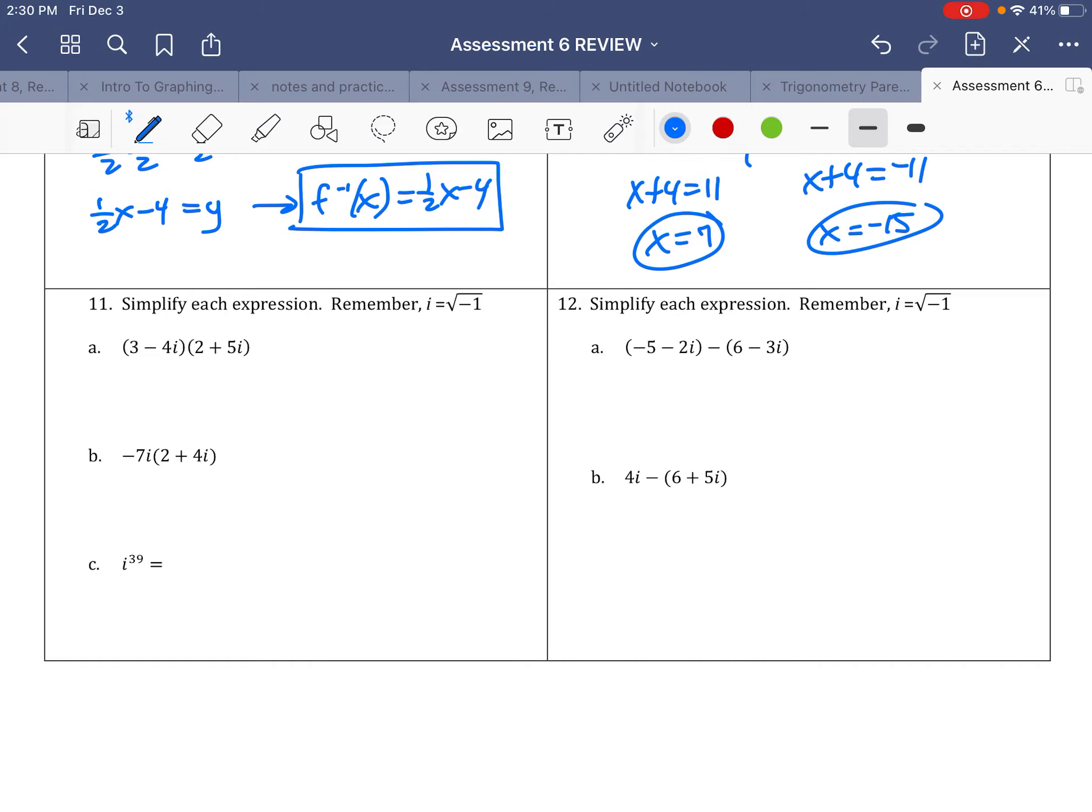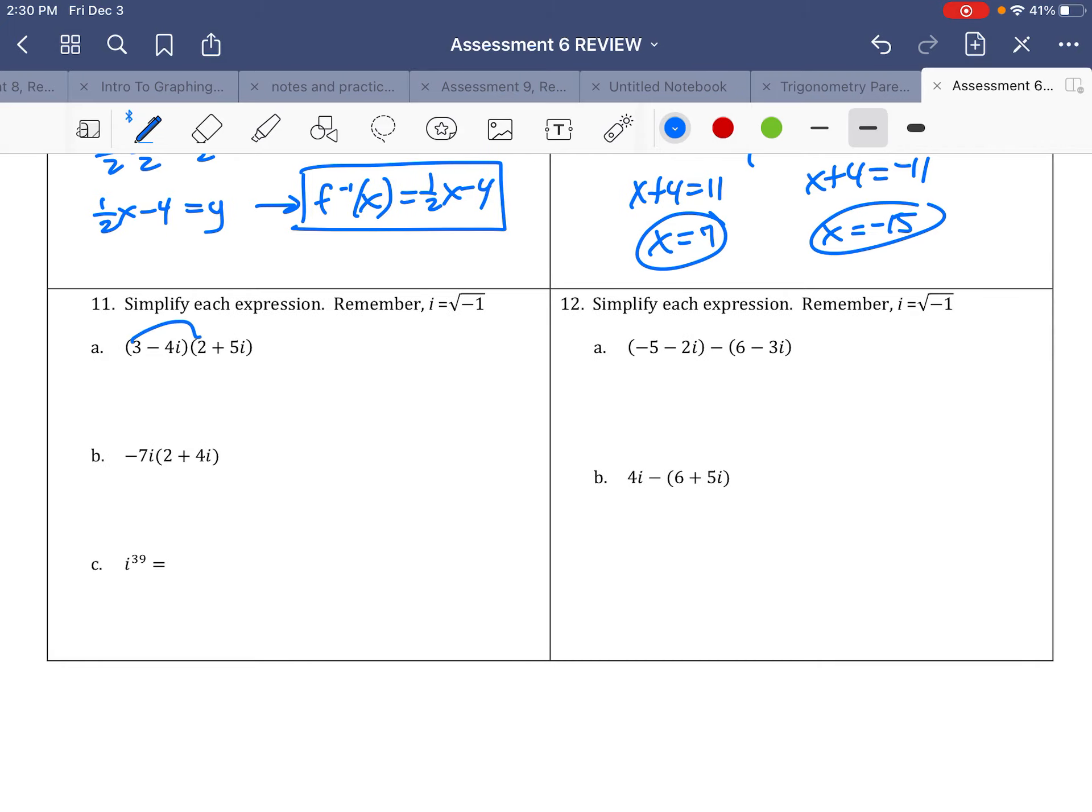And these last problems, remember, you can pretty much put these in the calculator as well, but I'll show you how to do them out here. 3 times 2 is 6. 3 times 5i is 15i. Inside here, I get negative 8i. And then the last part is negative 20i squared. So right away, I have the 6. 15i minus 8i is positive 7i. But this negative 20, remember, i squared is negative 1. So that's actually a positive 20. So 20 and the 6 make a 26, and then plus 7i.